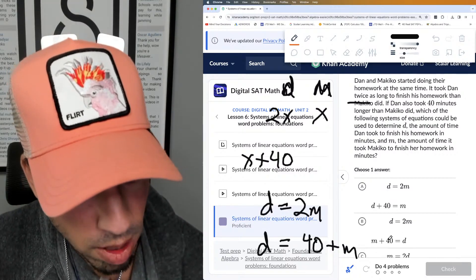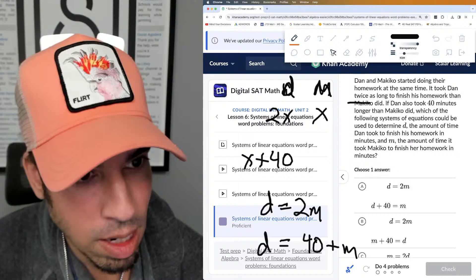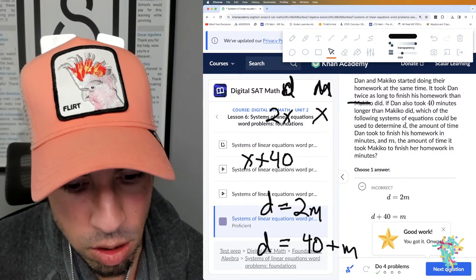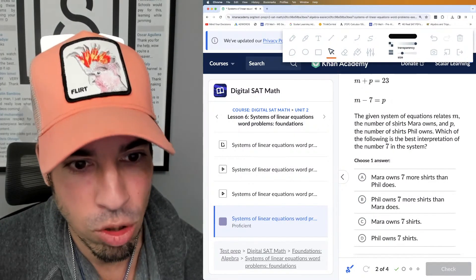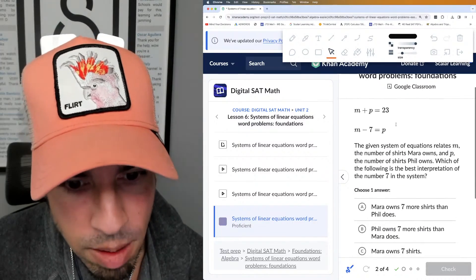The second one is Dan took—that's my verb, so that's my equal sign—40 minutes longer than Makiko. There's my system of equations. So let's see which one it is. d equals 2m, d equals m plus 40. They just flip the sides, but it's the same thing. B is the winner. That's how we do it.